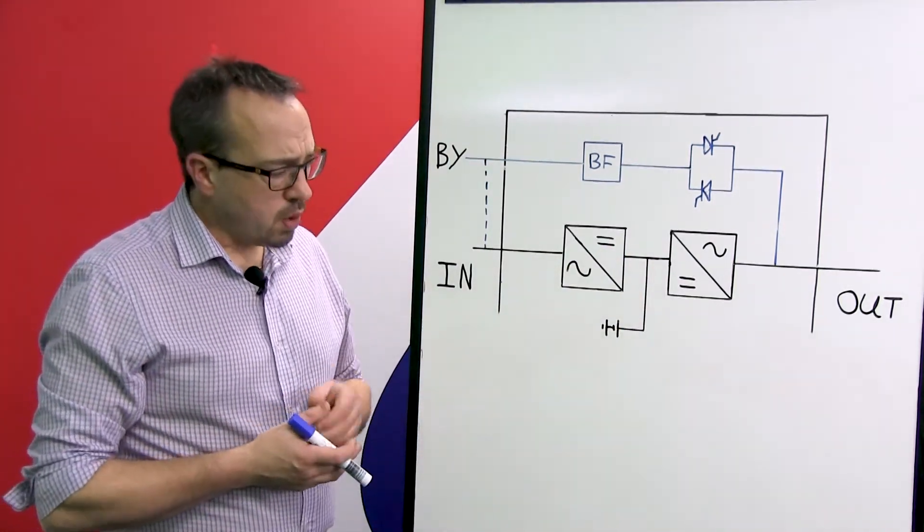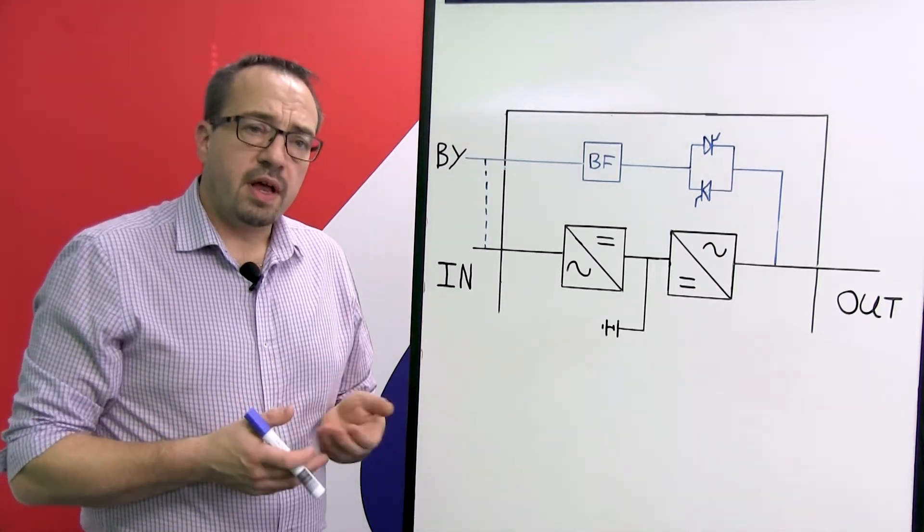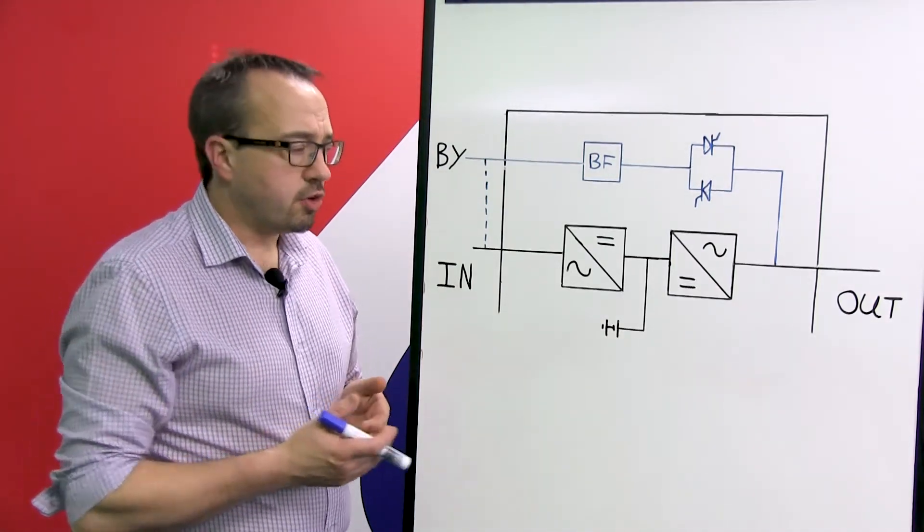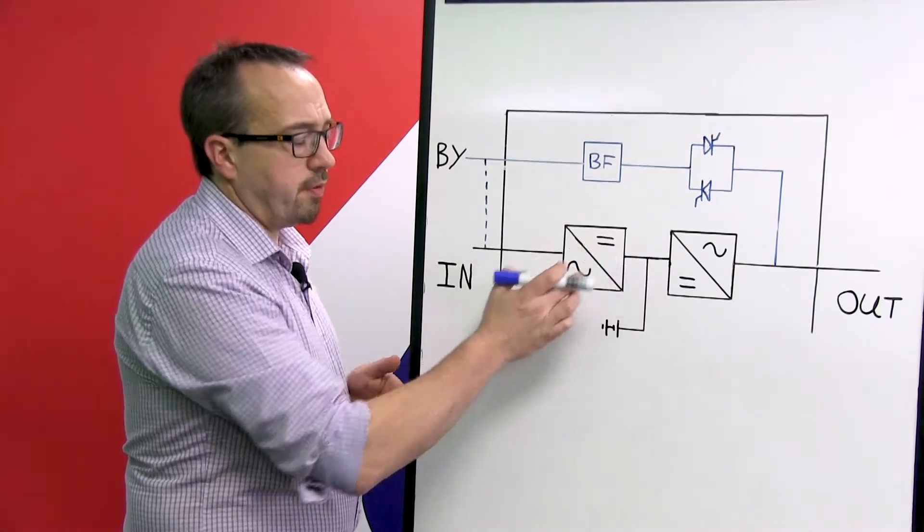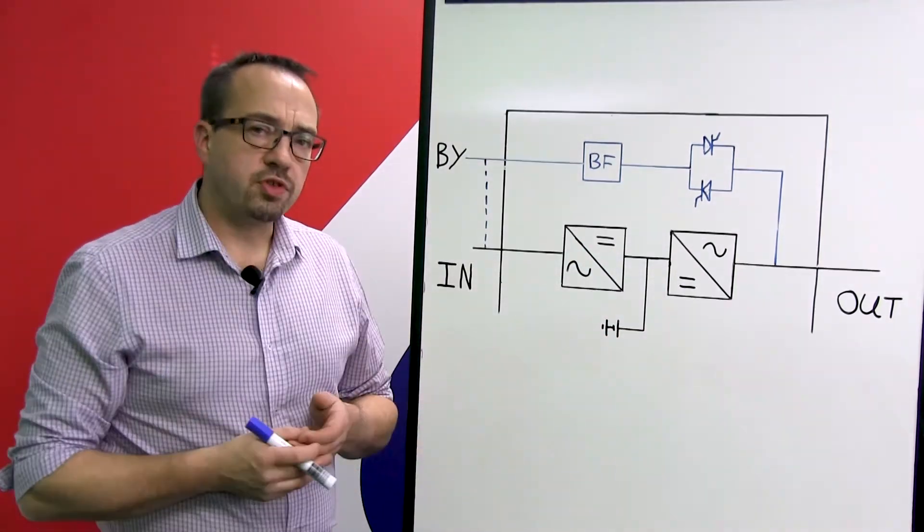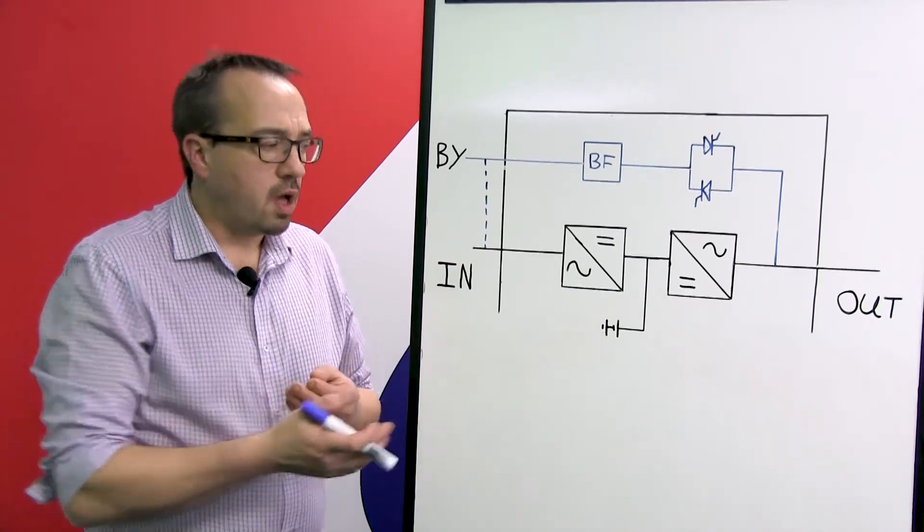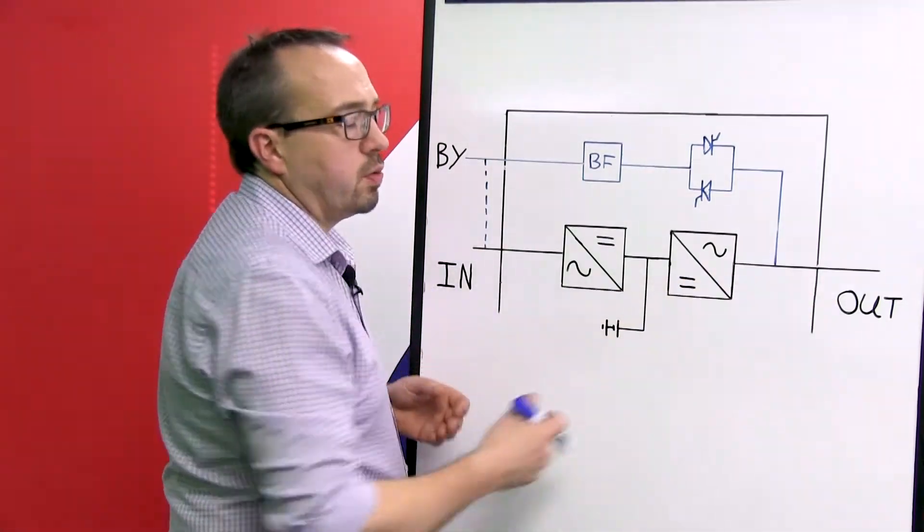However, once the main supply fails there is a delay in which the UPS system can transfer the power from the output of the rectifier onto the batteries. Now if the delay is too big, a break in the supply to the critical load will occur.